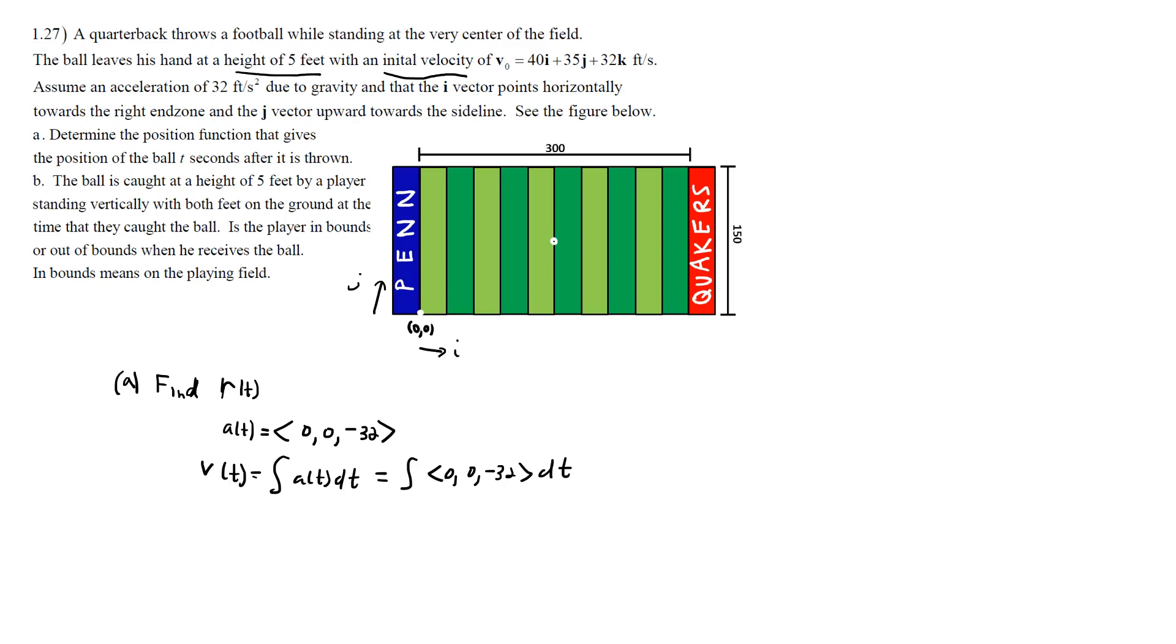And so we're going to get then integrate 0, you get a constant, call it C1. Integrate 0 again, call it a different constant C2. And then we integrate negative 32, and we get negative 32T. And then of course there could be another random constant, call that C3.